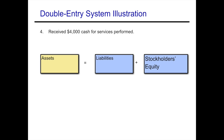Example four: receive $4,000 cash for performing services. We're receiving $4,000 in cash and generating revenue because we're performing a service. Revenues increase stockholders' equity, so as revenues are increasing, stockholders' equity is also increasing. Assets go up and stockholders' equity goes up, so our accounting equation is still in balance.